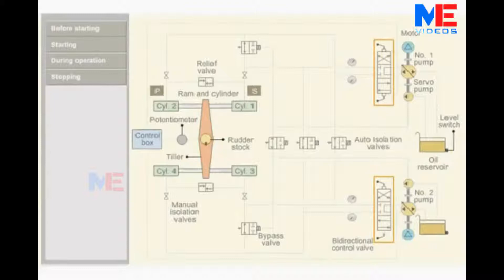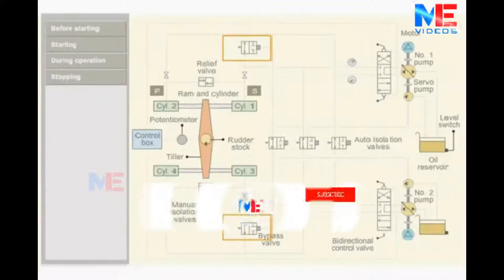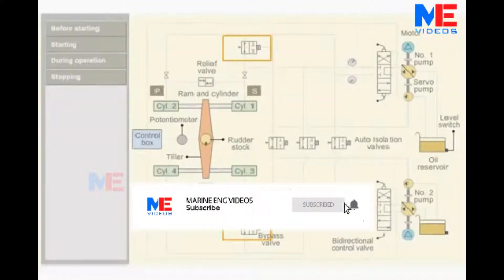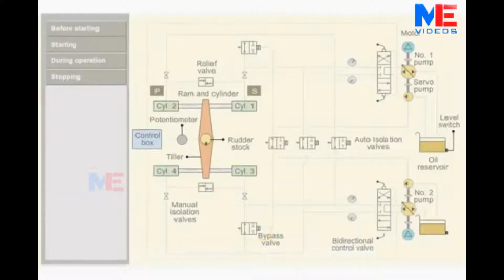The directional control valve changes the direction. Automatic and manual isolation valves isolate the defective system in case of emergency. Bypass valves for each set of rams bypass the defective rams when isolated. Relief valves maintain the system oil pressure within limits.